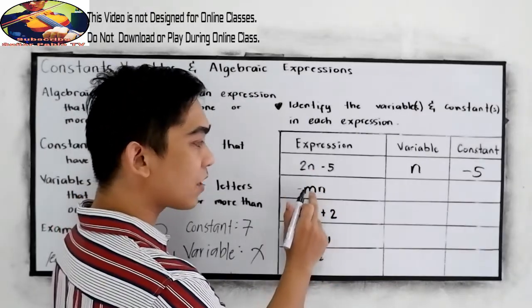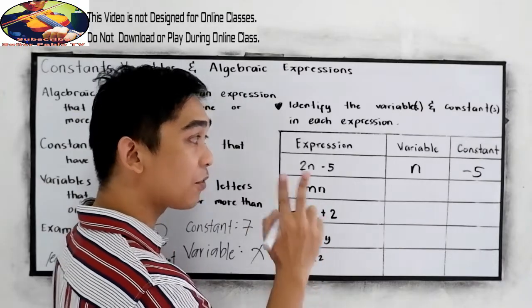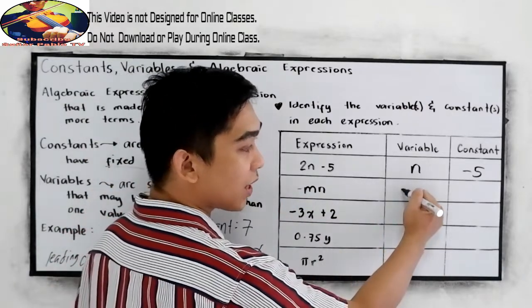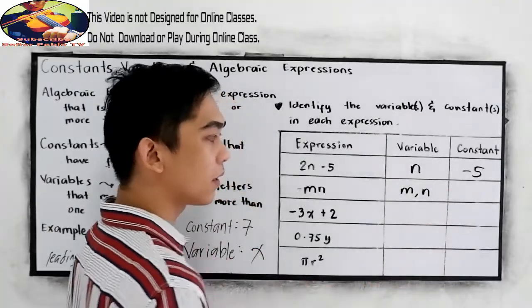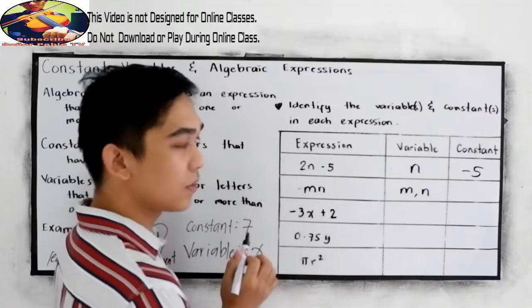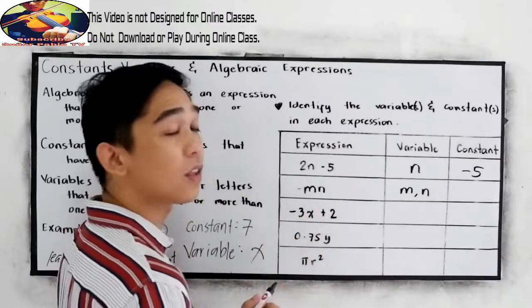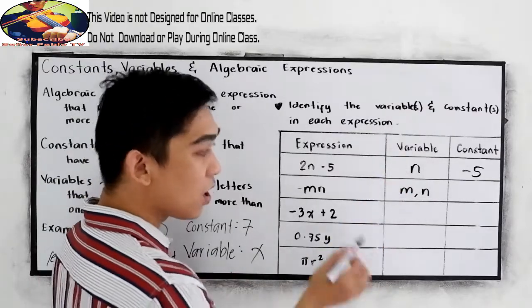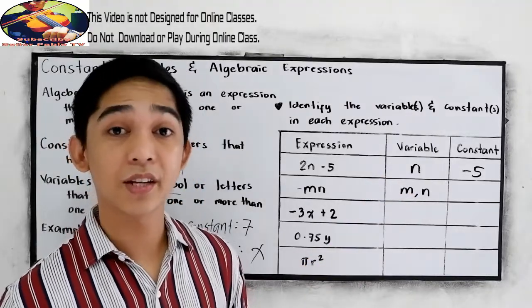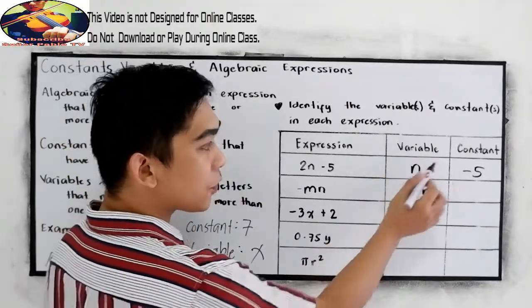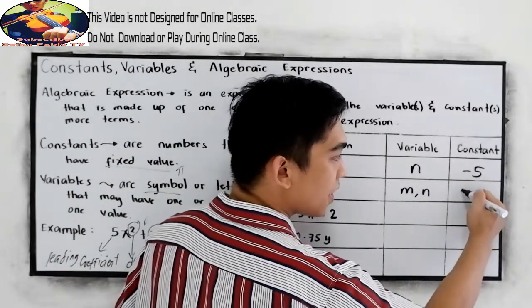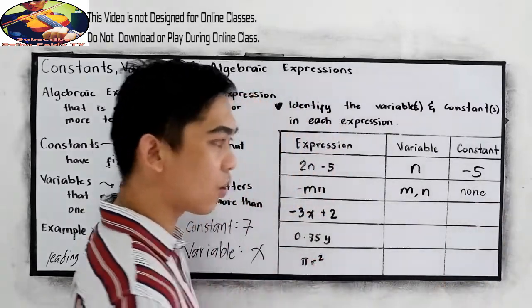Next, negative mn. In number 2, we have two variables. We have two letters, the m and n. So we're going to write m and n. Do I need to write the sign of our m? So notice we have negative in that. Since we are talking about the variable, there's no need to write the sign in our variable. Just the letter itself. And for the constant term, we don't have a constant term. So we can write here as none. There is no constant term.